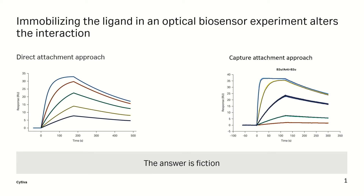Before we dig into the details, let's address the word 'immobilize.' It's a word used historically with optical biosensors, but it's misleading and creates a misconception about what is ultimately going on on the surface of the chip. Per Merriam-Webster, the definition of immobilize is to reduce or eliminate motion, or to prevent freedom of movement by mechanical means. This is not what is happening at the sensor surface.